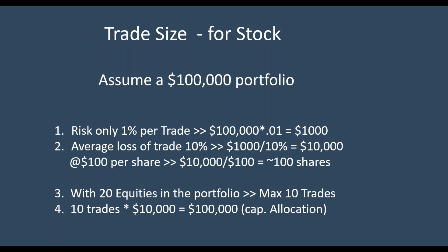For stocks, let's assume you have a $100,000 portfolio. As a professional, we only risk about 1% on each trade. So 1% of $100,000 would be $1,000. That's not the amount I want to spend on the trade — that's the amount I am willing to lose. And the average loss on all my stock positions is no more than 10%. So the $1,000 represents that 10%, meaning I can invest $10,000 per trade to risk $1,000 with a $100,000 portfolio.